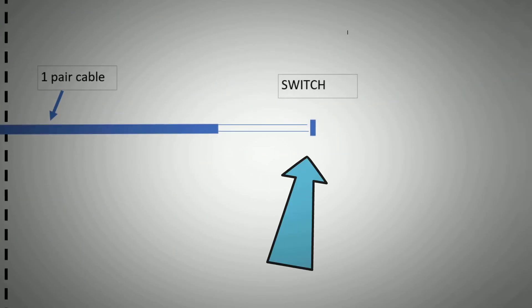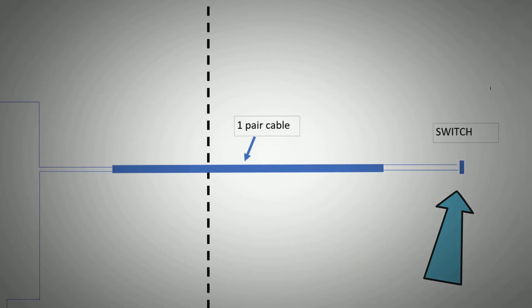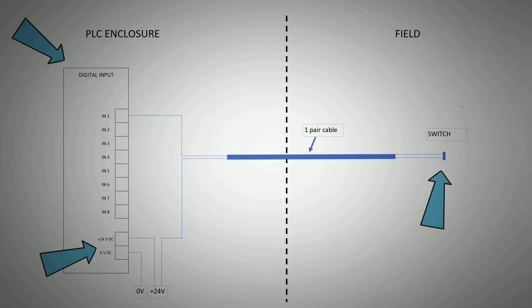Our field device, in this case a switch, will be connected via cabling that is terminated into the panel where the PLC is housed. For this example, we'll have a simple one pair cable. In reality, you'll often find field equipment connected via multi-core cables.